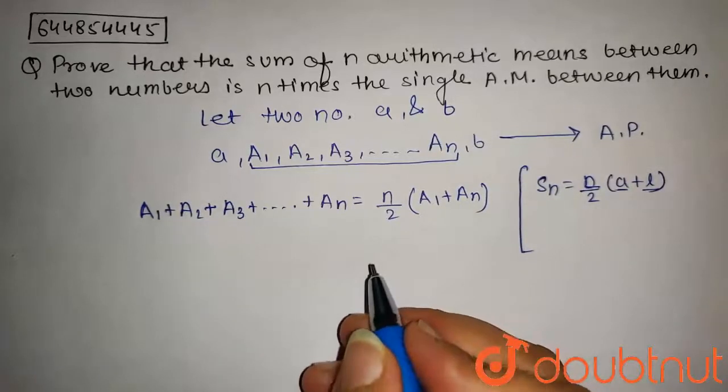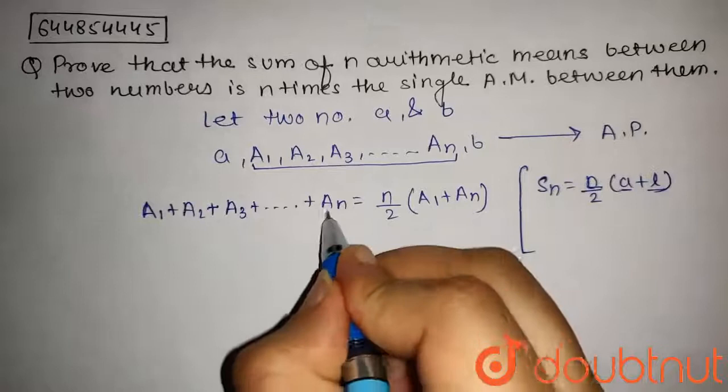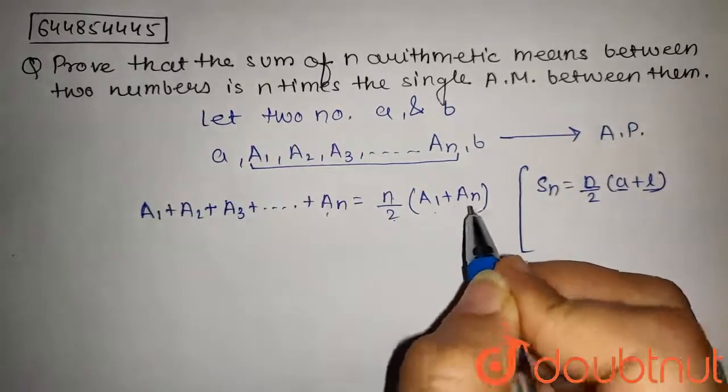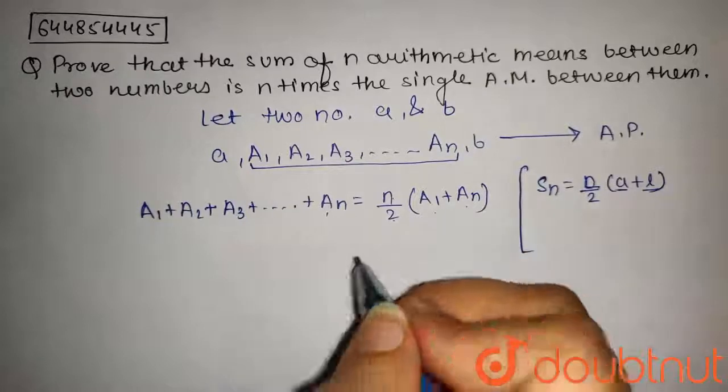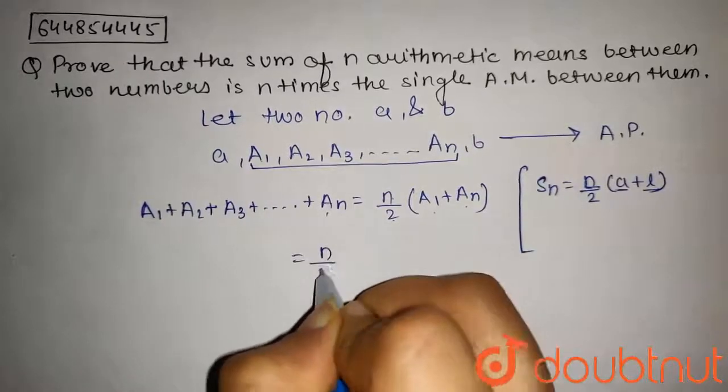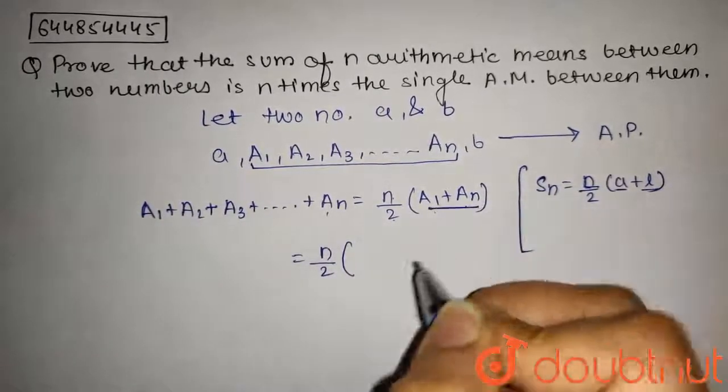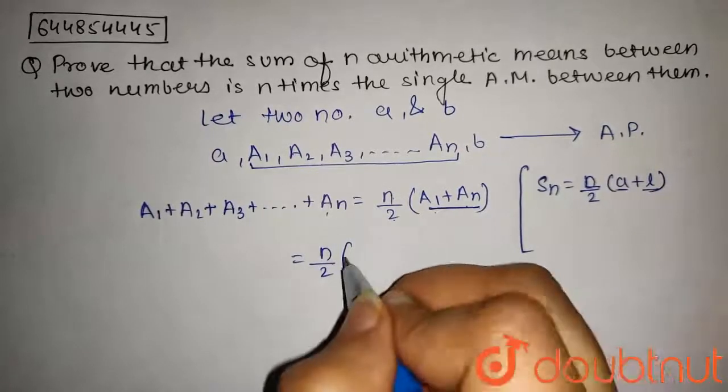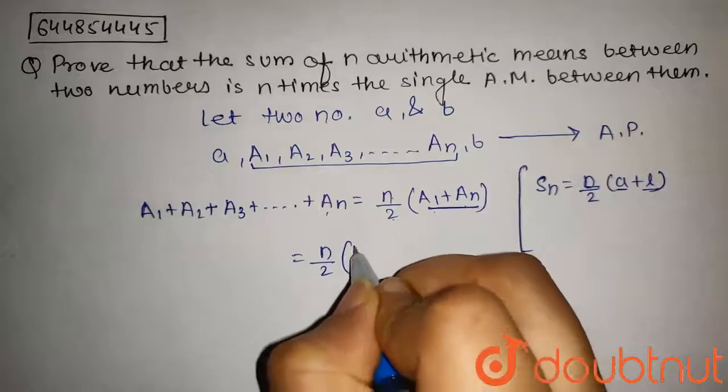So we can find out by this formula that sum of this sequence is equal to n/2(A₁ + Aₙ). Now in this we will add d and subtract d, that is the common difference. So A₁ minus d plus Aₙ plus d.